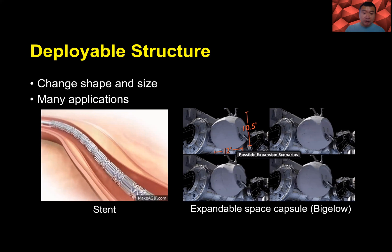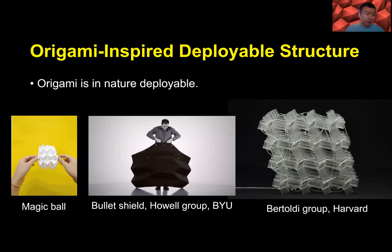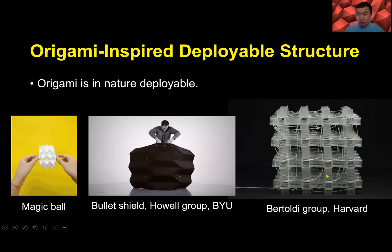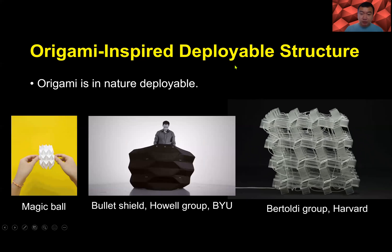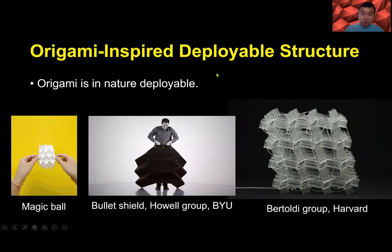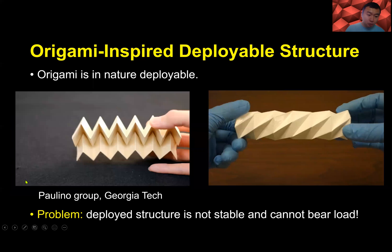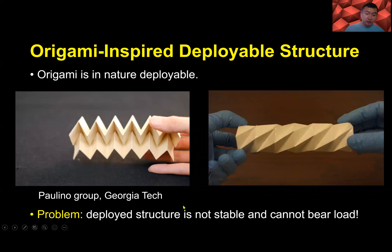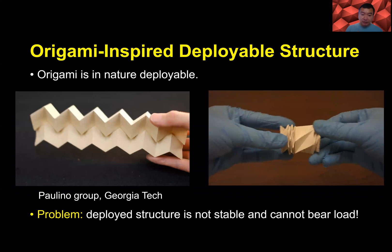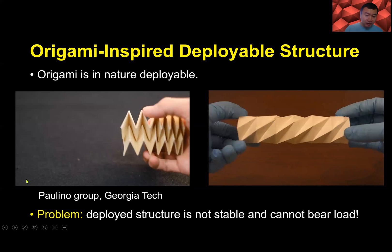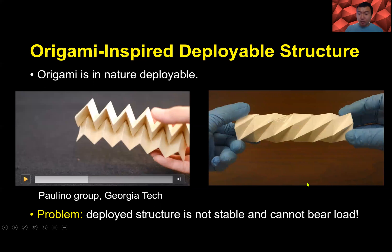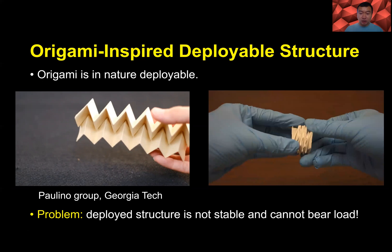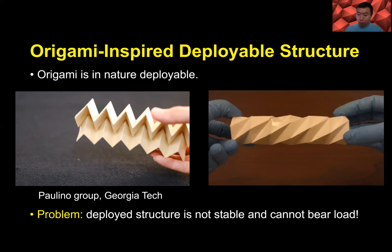Origami structures in nature are also deployable. Like this deployable bullet shield, an origami structure developed by Batali's group, a Miura tube developed by Pauline's group at Georgia Tech — which is deployable and can contract — and a triangular cylinder pattern, which is also deployable. All origami structures are great deployable structures.